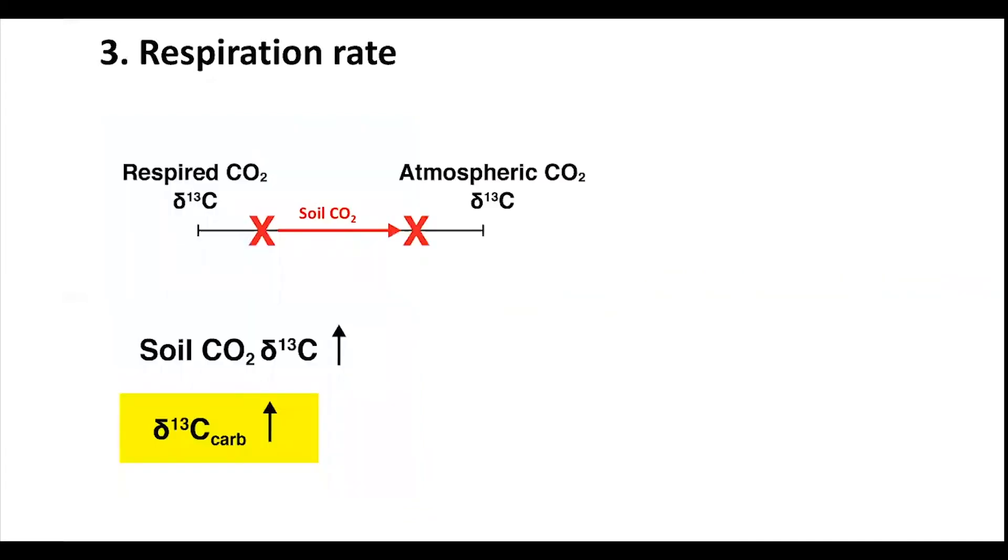During aridification, respiration rates of C3 plants decrease due to their sensitivity to water loss. As respiration rates decrease, soil CO2 values would shift toward the atmospheric CO2 end member, and as these values increase, delta C13 values of soil carbonates would also increase.